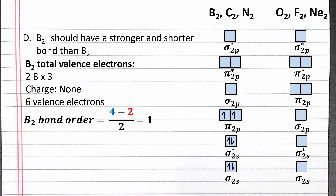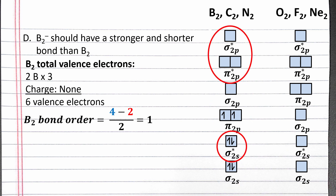To calculate bond order, we take the number of electrons in bonding molecular orbitals, subtract the number of electrons in antibonding molecular orbitals, divided by 2. The bonding molecular orbitals, circled in blue, have 4 electrons. The antibonding molecular orbitals, circled in red, have 2 electrons, so the bond order of B₂ is 1. To adjust this diagram for B₂⁻, we need to add 1 more electron to account for the 1− charge. This electron goes into the π2p bonding molecular orbital, so we should expect the bond order will increase and the bond will get stronger and shorter.